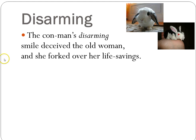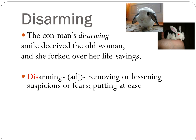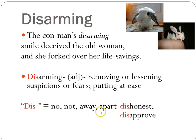Notice disarming uses one of your root words. Disarming is an adjective — it is not a verb. We're not talking about asking someone to lay down their weapons specifically, although the word can definitely mean that. In this story, and in most instances, disarming means to remove or lessen suspicions or fears. You're putting someone at ease, making them feel comfortable, smiling at them, trying to make someone trust you. The prefix DIS, of course, means no, not, away, or apart. So if someone is dishonest, they are not honest. If you disapprove of something, you do not approve of it. Make sure you write down the prefix and the definition.